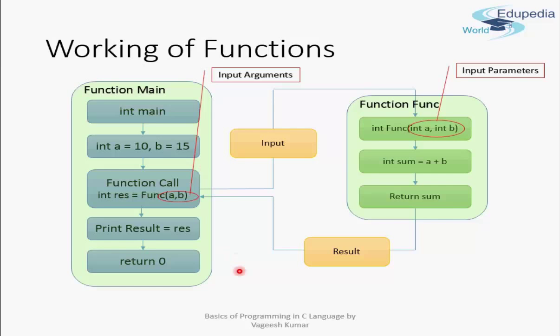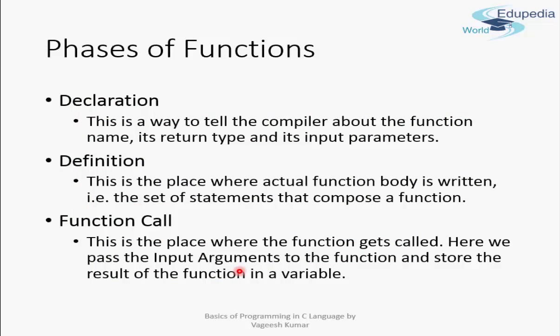Let us learn about the phases of a function. The first phase is the declaration of the function — this is just a way to tell the compiler the function's name, return type, and input parameters. It informs the compiler that this kind of function exists somewhere in the C files being compiled, and it verifies that the call of that function is correct. This is typically done in header files or at the beginning of C files.